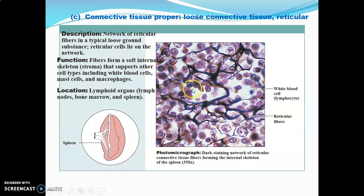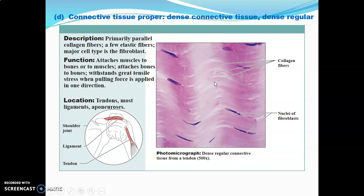Reticular tissue consists of a network of reticular fibers — appearing black on stain — along with ground substance and reticular cells. Its function is to provide a soft internal skeleton or stroma that supports other cells such as white blood cells, muscle cells, and macrophages. It is mainly found in lymphoid or immune organs: lymph nodes, bone marrow, and the spleen.